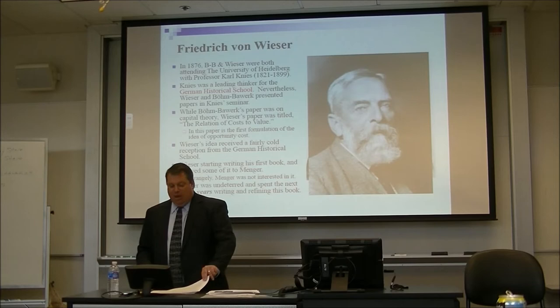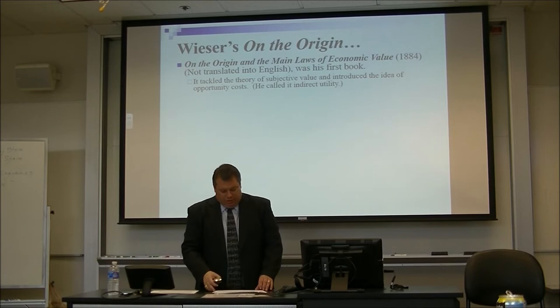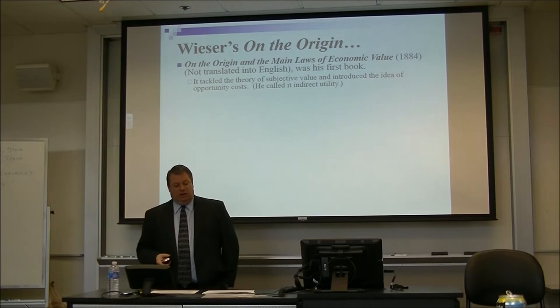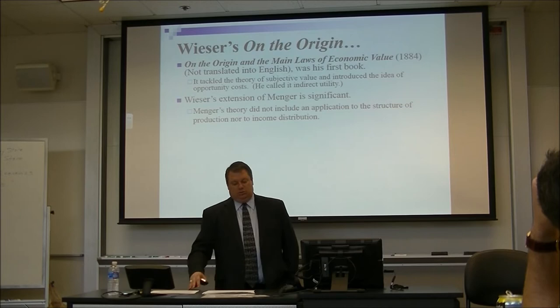Wieser's first book came out in 1884. It's not translated into English — it's in German. It tackled the theory of subjective value and introduced the idea of opportunity cost, which he called indirect utility. His extension is of Menger, and that's a significant extension. Menger's theory did not include application to the structure of production and didn't apply it to the distribution of income. That's what Wieser does — he applies it to these things.